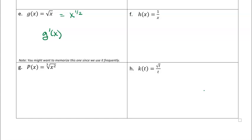So g prime of x — I'm just going to bring down the power, 1/2, and then I'm going to subtract 1. So I'm going to take 1/2 minus 1, or 2/2 — 1/2 minus 2/2 is going to be negative 1/2. This is just fine, you can leave it that way. If you want to simplify it a little bit, the negative power would flip it — it would put the x to the 1/2 in the denominator, and the 1/2 power is the square root. So I can write this as 1 over 2 square root of x.